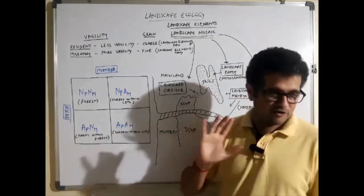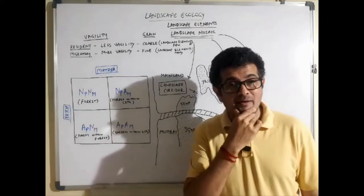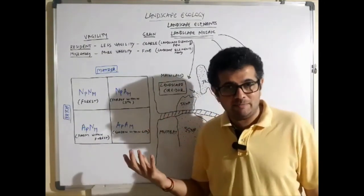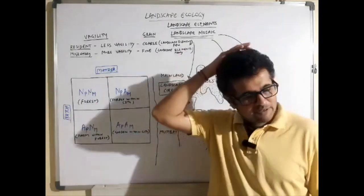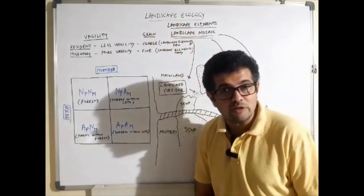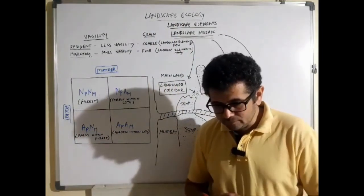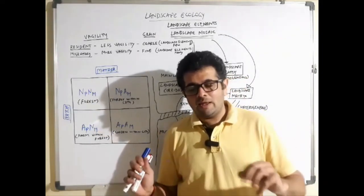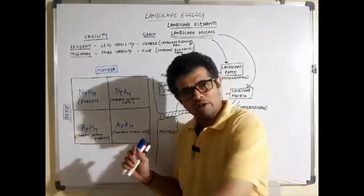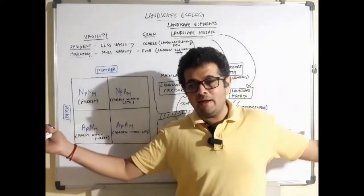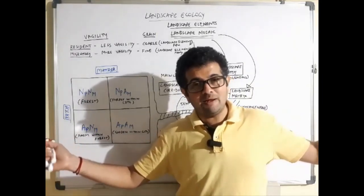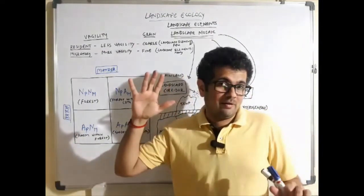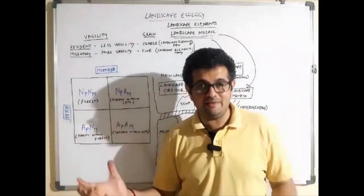Whenever 'A' is written, it means artificial — created either deliberately or indeliberately by human impact. For example, the Gibbon Sanctuary in Assam is a small 20 square kilometer area surrounded on 360 degrees by tea gardens. That flat forest area surrounded by tea gardens becomes a natural patch in an artificial matrix, because tea gardens are not found naturally — they are created by cutting the forest and planting tea.